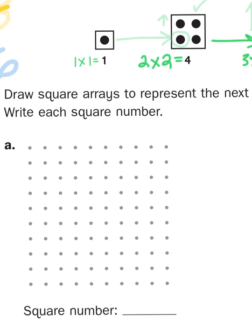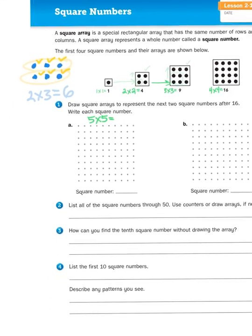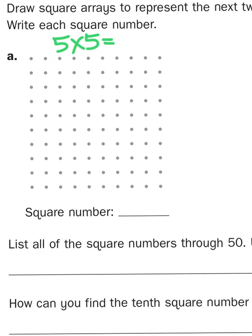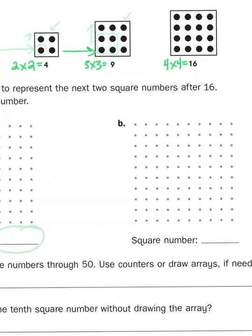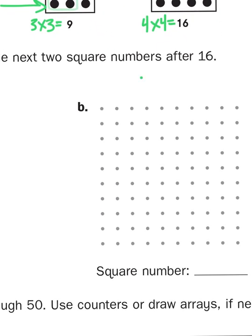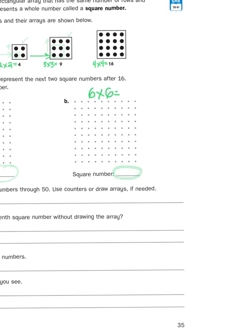So what you would do here is create 5 rows with 5 in each row, and that would give you the answer — what is 5 times 5. You will put the answer down here. And what do you suppose would happen next? That's going to be 6 rows with 6 in each row — 6 times 6. And I'm looking for you to find that square number.